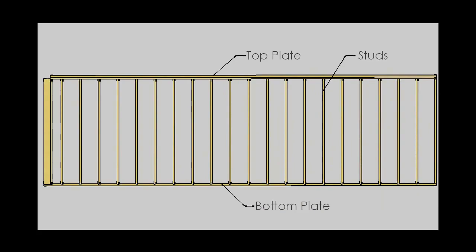Understanding the fundamental difference of these two wall types, let's look at their anatomy. Regardless of the wall type, all walls will consist of three basic elements: a bottom plate, a top plate, and studs. In a non-load-bearing wall, the framing members would traditionally be 2x4s or smaller, and in a load-bearing wall, those framing members would be at least 2x4s, and oftentimes even larger.